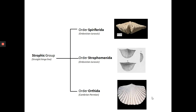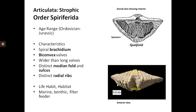The strophic group is divided into three orders: Order Spiriferida, Order Strophomenida, and the Orthida — commonly called the spirifers, the strophomenids, and the orthids. Let's look at them one by one.